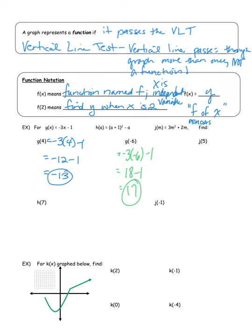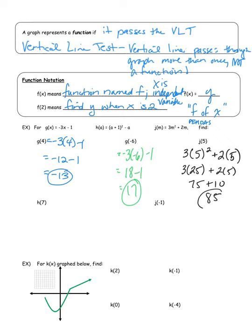The next question refers to the function called j — that's why we use function notation, so we know which one to use. j(5) equals three times five squared plus two times five. Following PEMDAS, we square first: five squared is 25 — note we only square the five, not the three. Then multiply: three times 25 is 75, plus two times five is 10. Adding: 75 plus 10 equals 85. Please pause the video now and do the next two questions on your own.